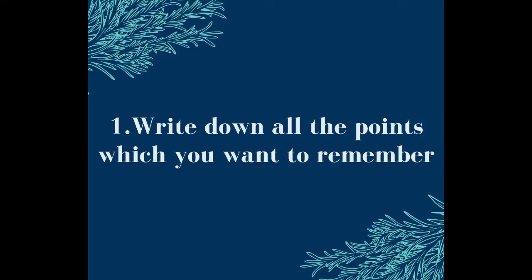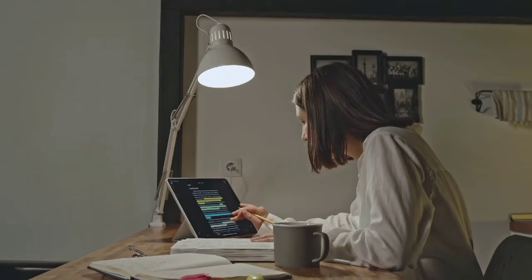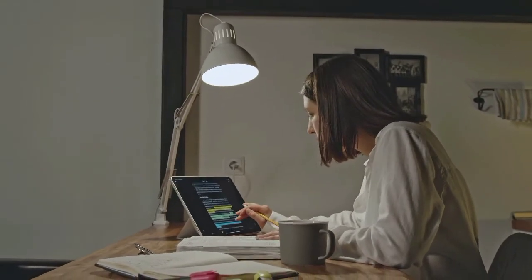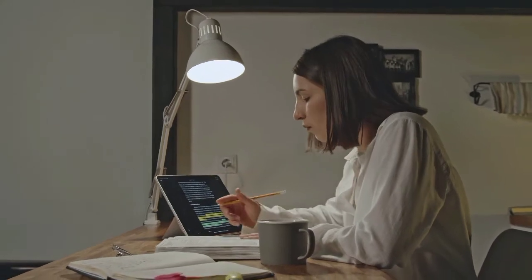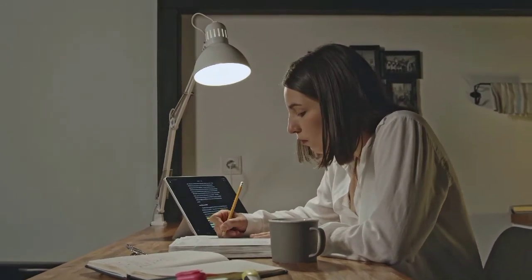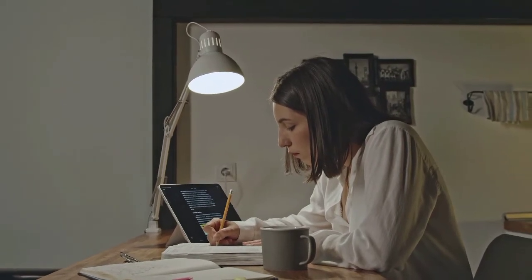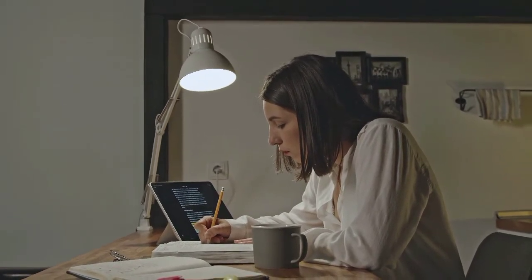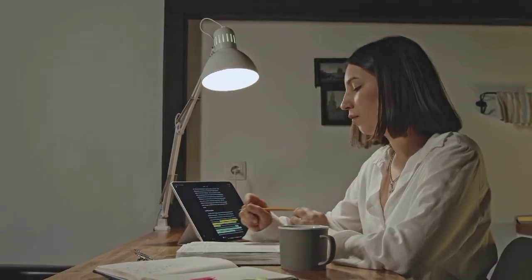The first way: write down all the points which you want to remember. One of the best ways to memorize things is to make a list of all the things that a person wants to remember. Always keep a notebook and whenever there are words which need to be remembered, list them and make use of them whenever required.